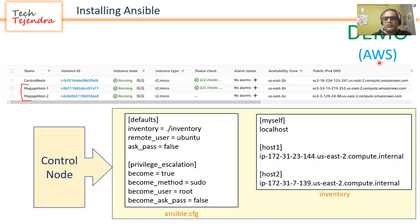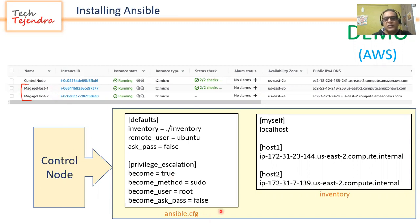I have set up my AWS machines for demonstration. In the AWS console, I have a control node and two managed hosts: managed host one and managed host two. On the control node, I have two files: the Ansible configuration file and the inventory file, which I described in the first two parts.